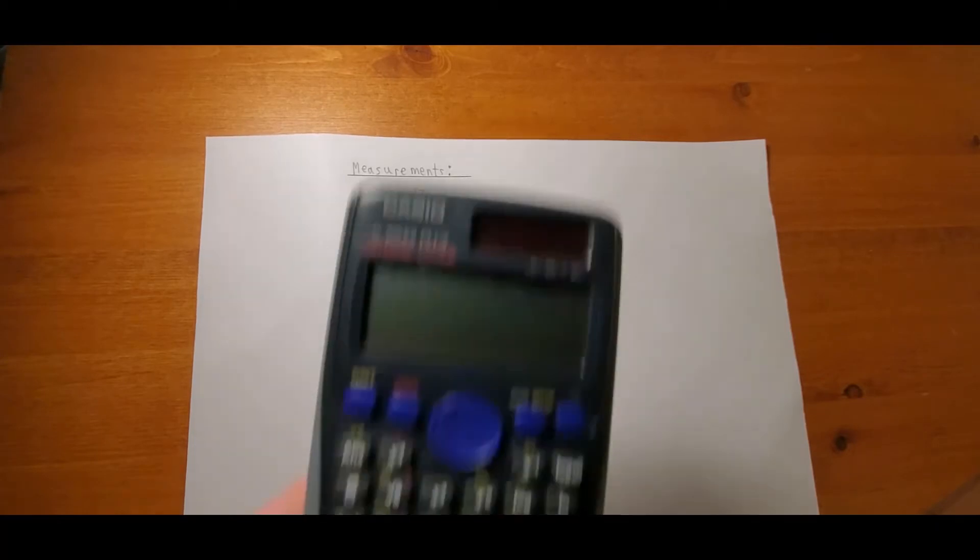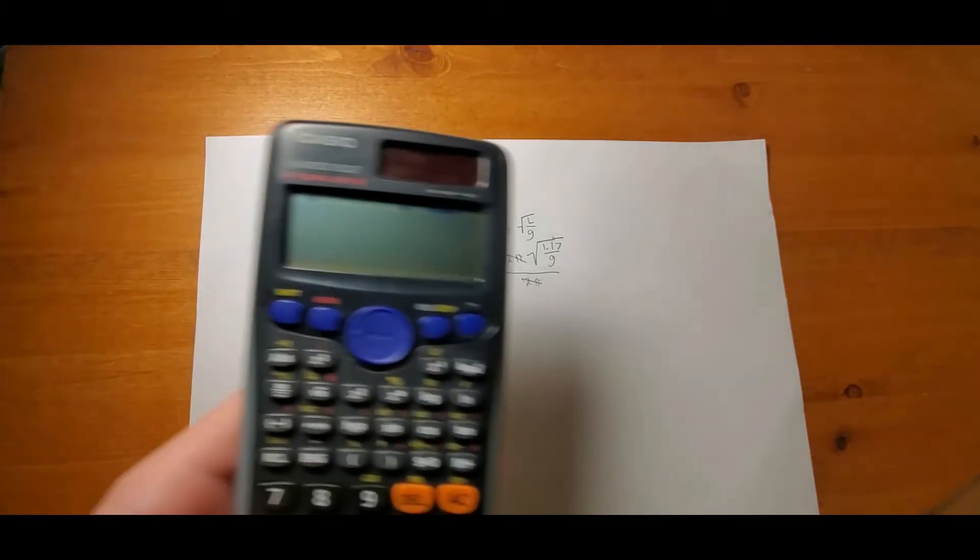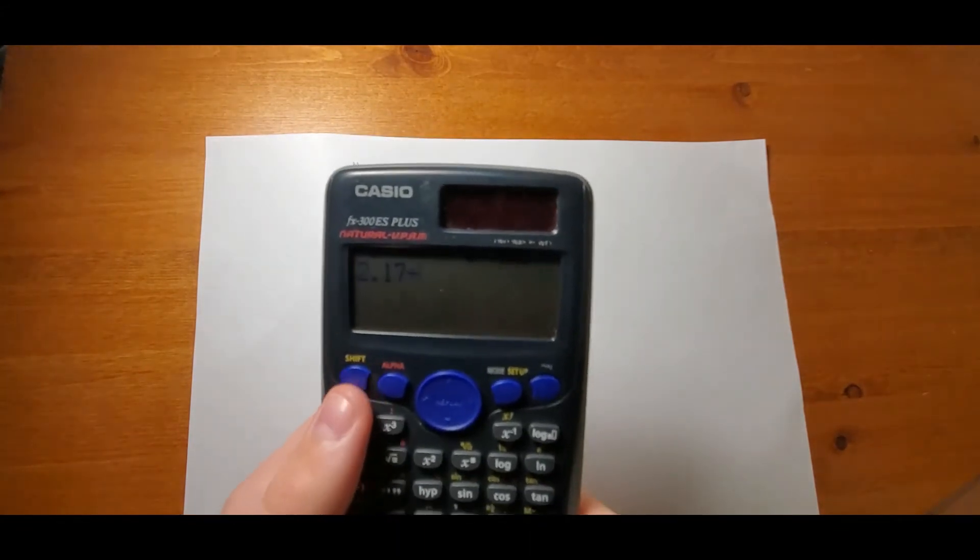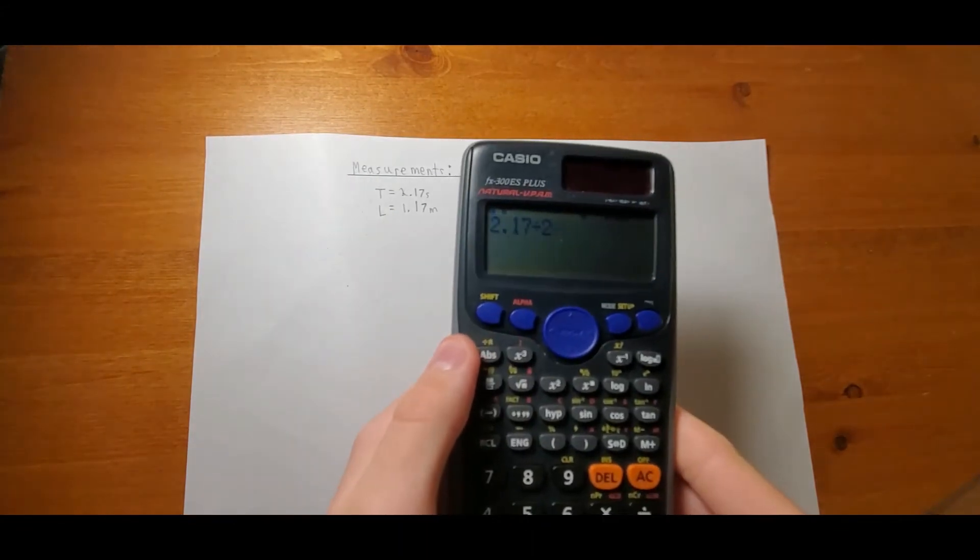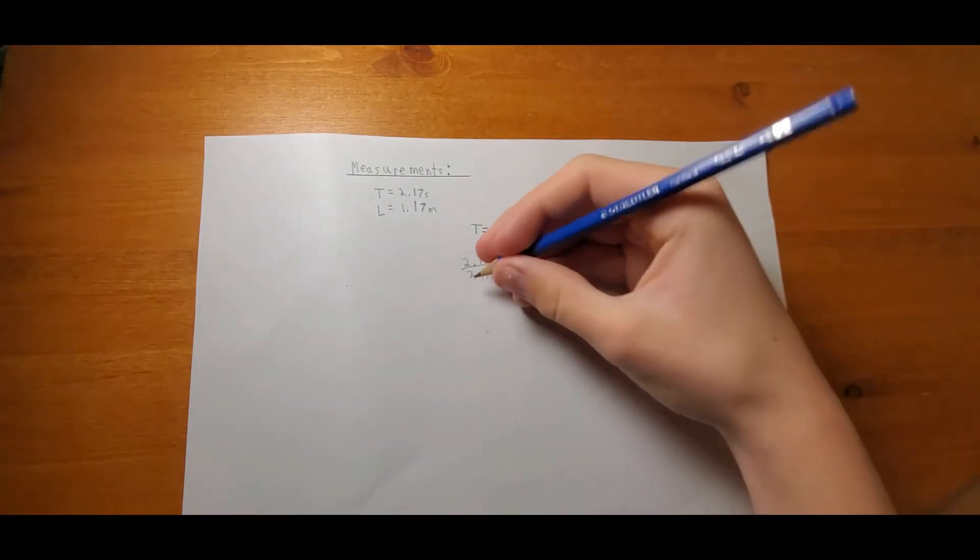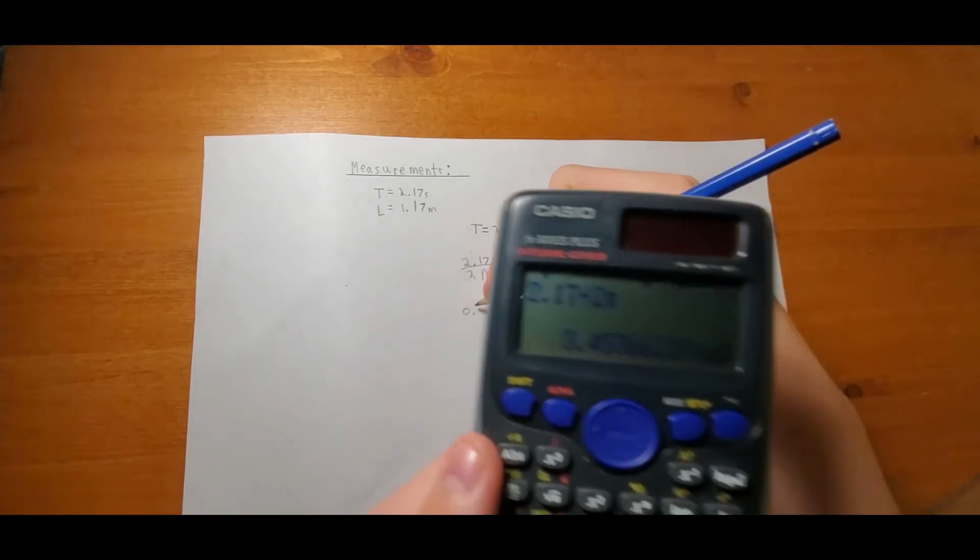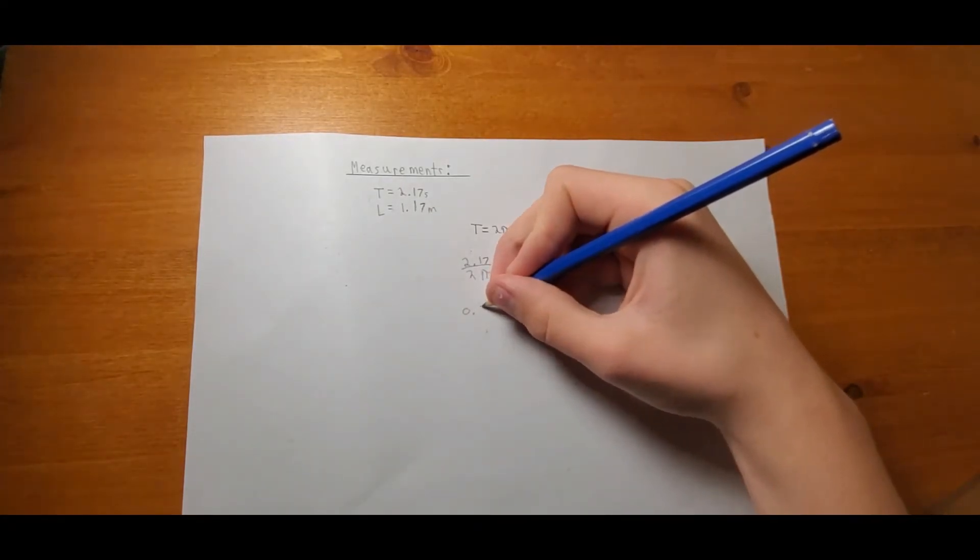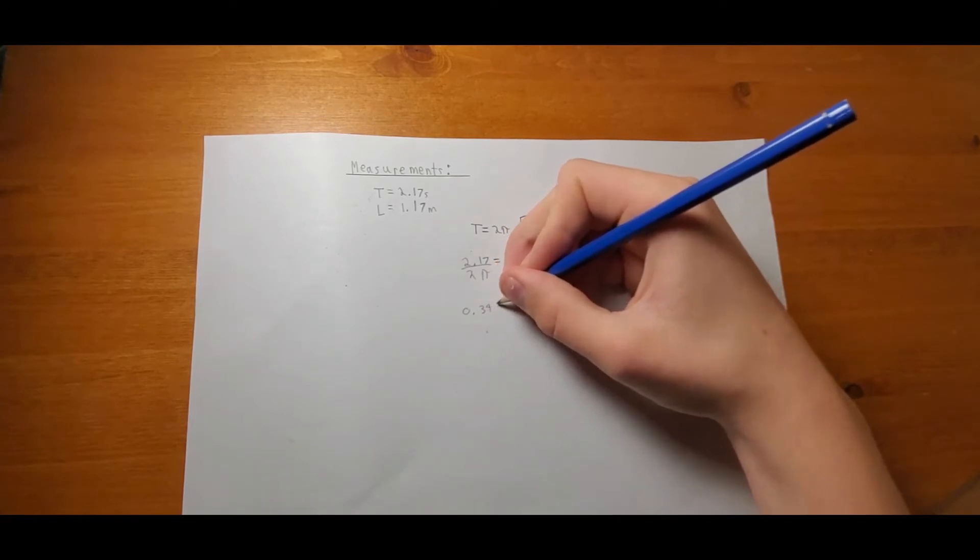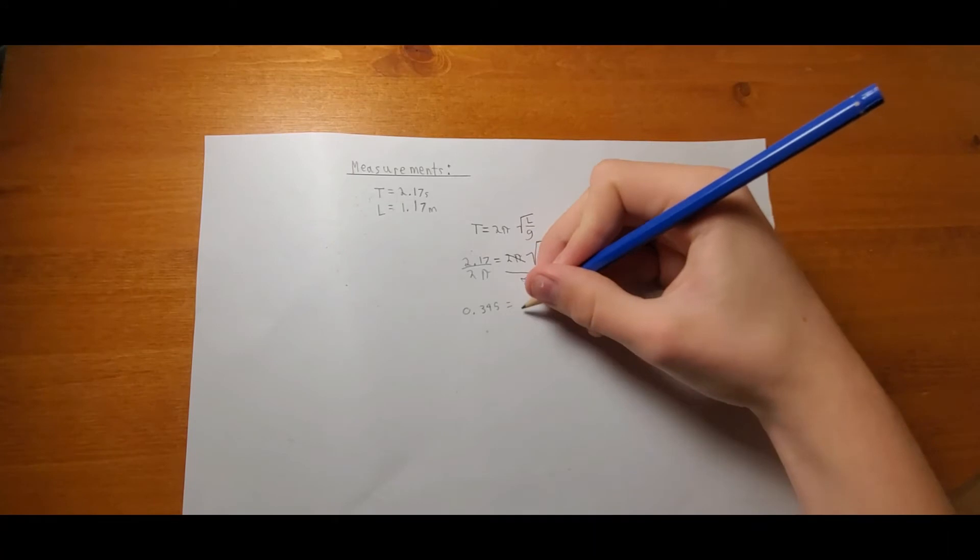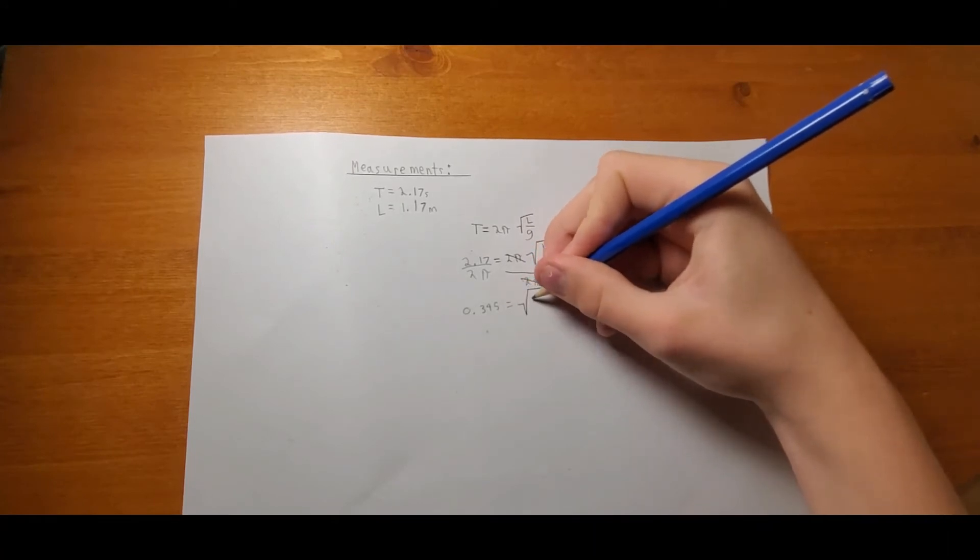So we're just going to do this. Let's do a quick little calculation, which is 2.17 divided by 2 shift pi, which gives us 0 point, you know, you can look out here, you know I'm not lying. 0.345 is equal to, and now we don't have a 2 pi here anymore, square root of 1.17 over g.